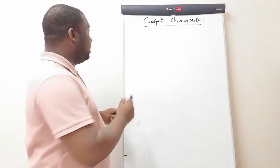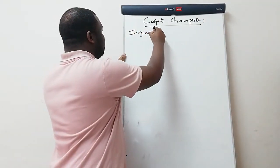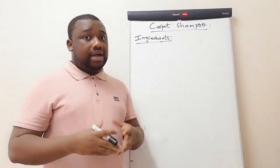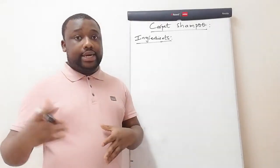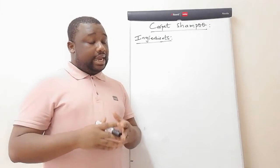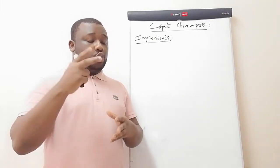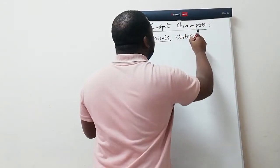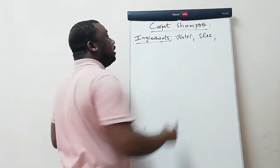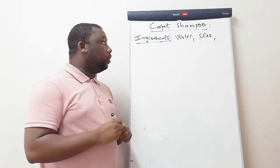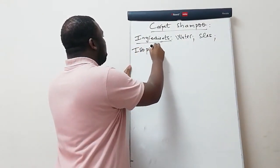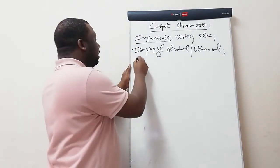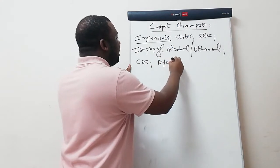Let's start by stating ingredients. The ingredients of a carpet shampoo: we have water, we have SLES, we have isopropyl alcohol or ethanol — it's a matter of preference, use one of the two. We have CDE, and we have dye and perfume. The SLES used here must have a strength of 25%.